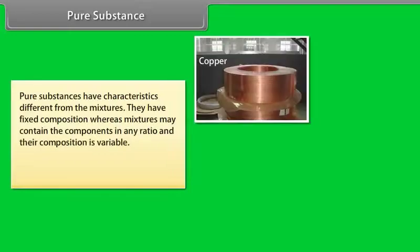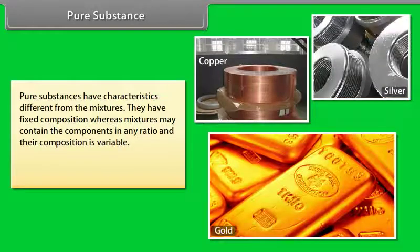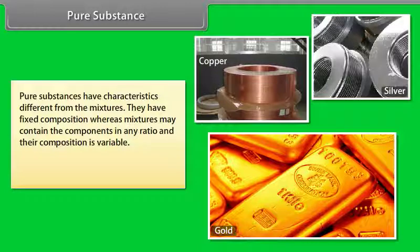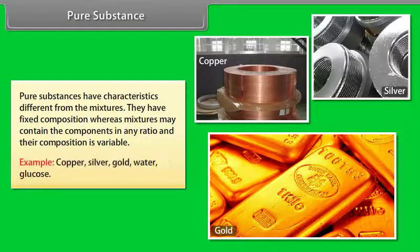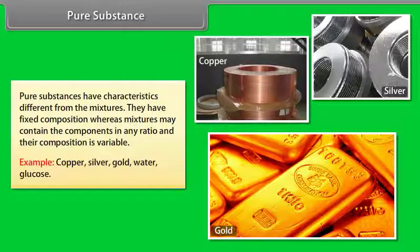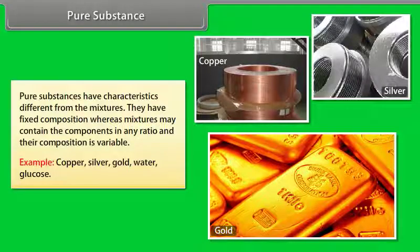Pure Substances have characteristics different from the mixtures. They have fixed composition, whereas mixtures may contain the components in any ratio and their composition is variable. Examples: Copper, Silver, Gold, Water, Glucose.